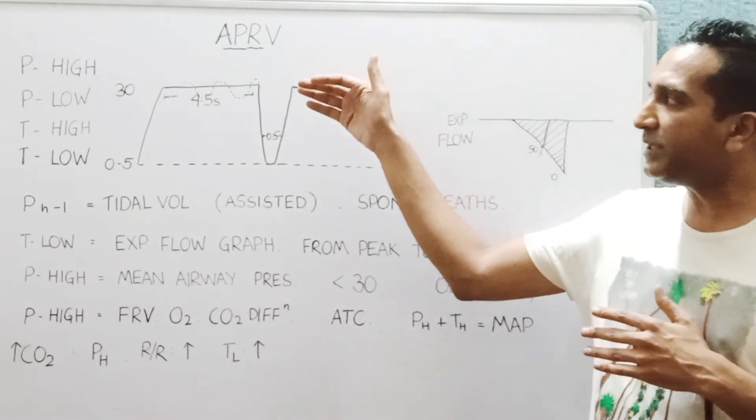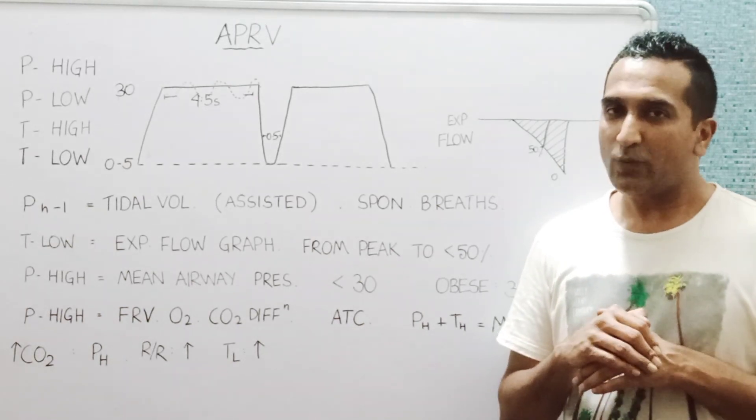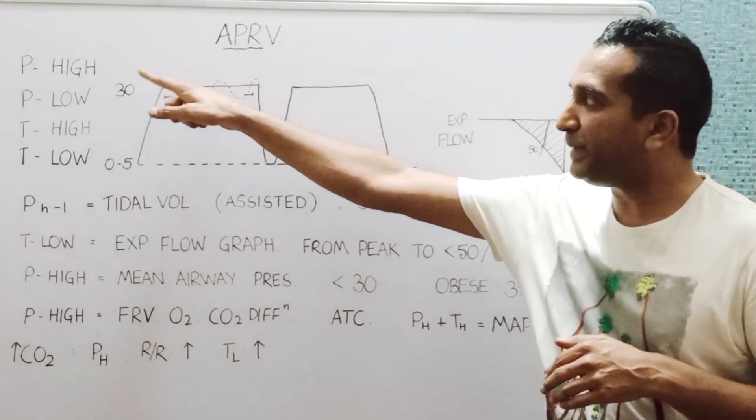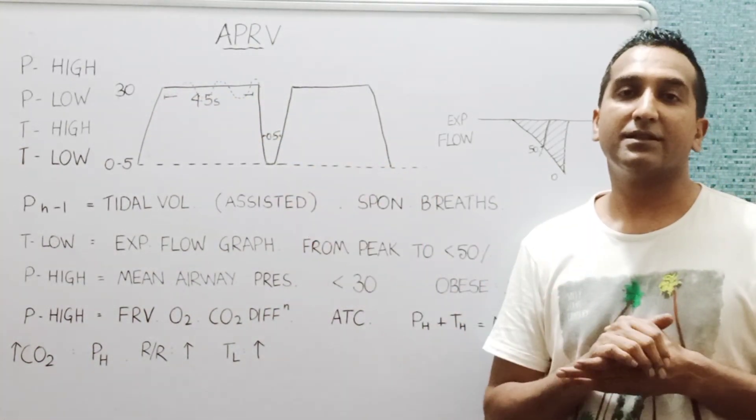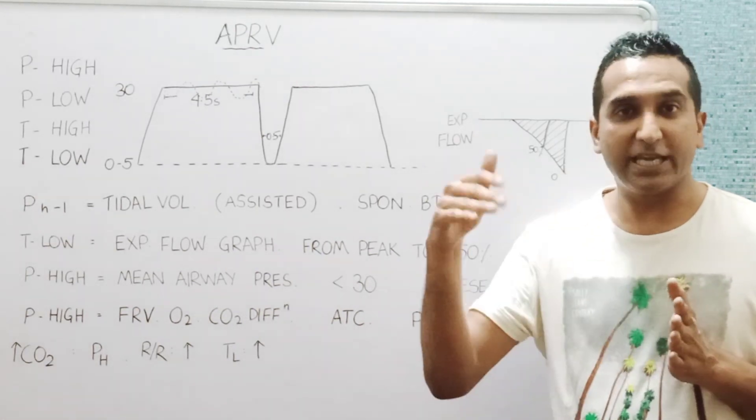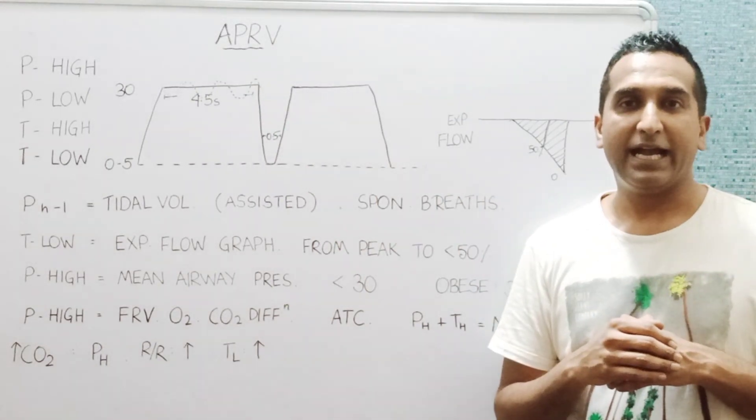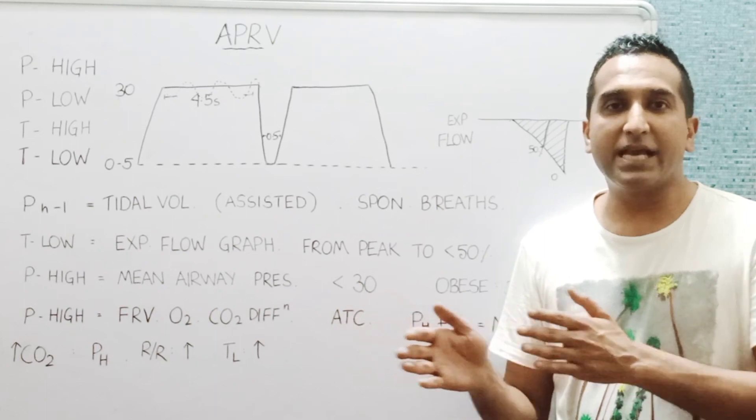When you are trying to take away the support, then what we generally do is we decrease the P high but we increase the T high. So the releases become lesser, the patients take more and more spontaneous breaths at these higher levels, and so now the work of breathing by the patient gradually increases.